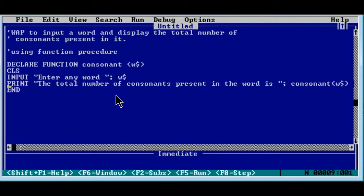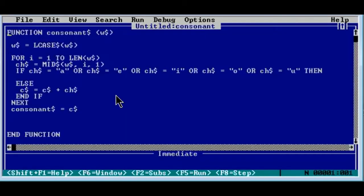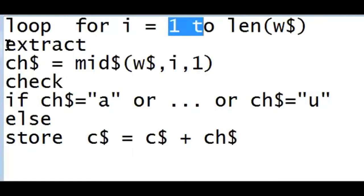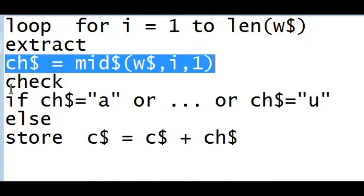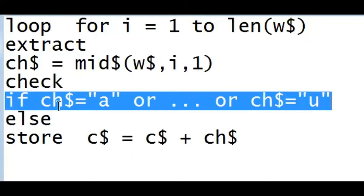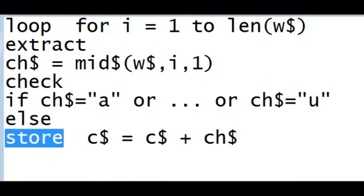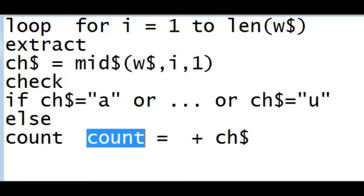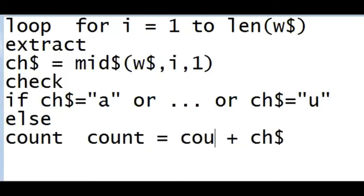This is the end of our main module. Now we go to the definition part and edit a few places. We form a loop as usual, from one to the length of the word. We extract the character, check the condition — if the condition is false, we know it is a consonant, so we go to the else part. Instead of storing, we will count. To count, we use one variable which is 'count', and with this variable we will count the total number of consonants.